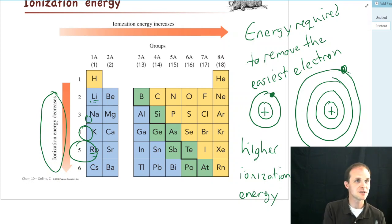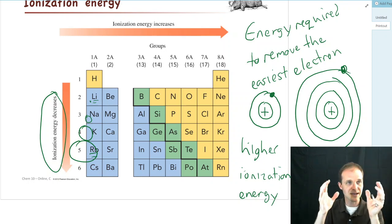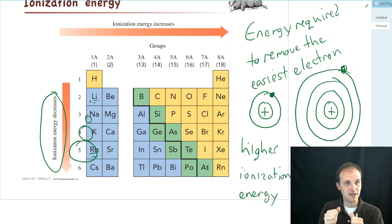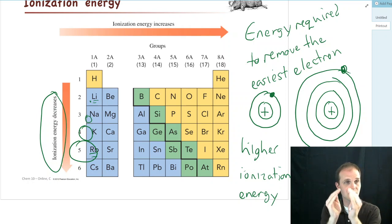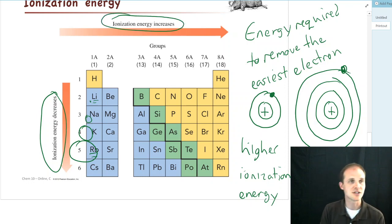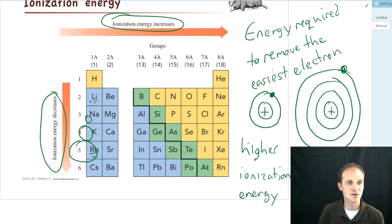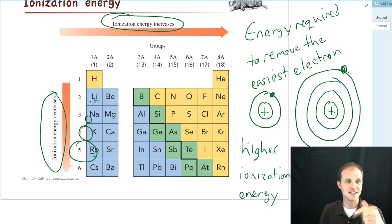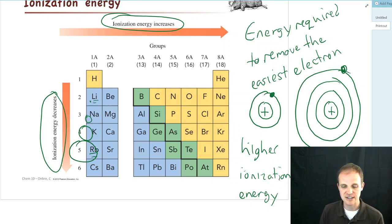They're opposite trends. As we go across the periodic table from carbon to nitrogen to oxygen to fluorine, atoms got smaller and smaller, so ionization energy increases — it gets harder to remove electrons because they're closer to the nucleus. Size increases as you go down, decreases as you go across. Ionization energy increases as you go across and decreases as you go down. If you remember one, the other is the opposite. Thanks so much.